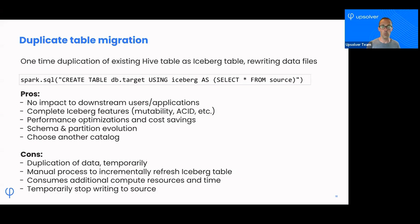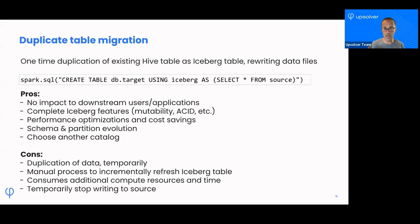You do get the complete feature set of Iceberg. If you want to do updates and deletes, write to it via transactions, do compaction — you can do all of that on the Iceberg table. Schema evolution and partition evolution work there too. As you create a new table, you can actually write it into a new partition spec, or you can update some of the column types.